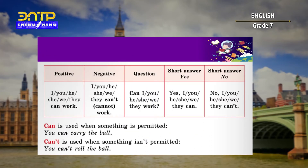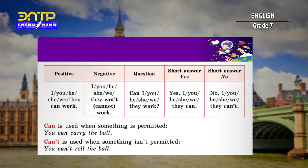Here you can see a table with the rules. 'Can' is used when something is permitted — for example, you can carry the ball. And 'can't' is used when something isn't permitted — you can't roll the ball. To make a positive sentence: I/you/he/she/we/they + can + verb. Negative sentence: I/you/he/she/we/they + can't + verb. To make a question: Can I/you/he/she/we/they + verb? And to give a short answer: Yes, I can. Or, no, I can't.